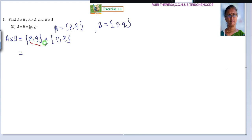P is paired with P, giving (P, P). Then P is paired with Q, giving (P, Q). Next, Q is paired with P, so (Q, P). Finally, Q is paired with Q, giving (Q, Q).